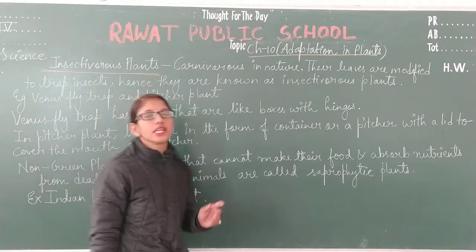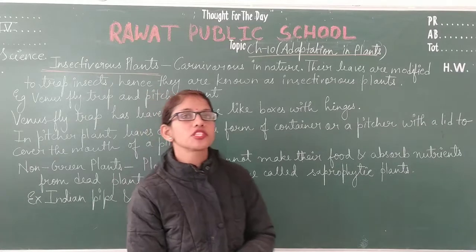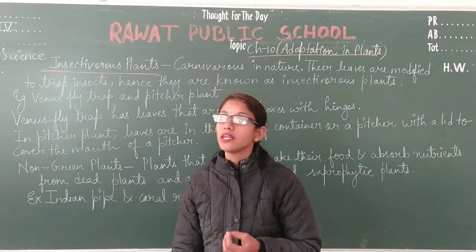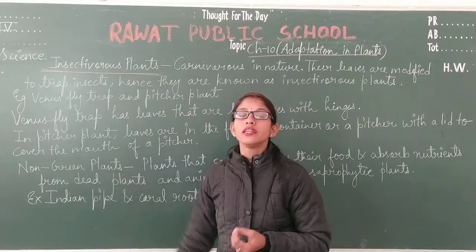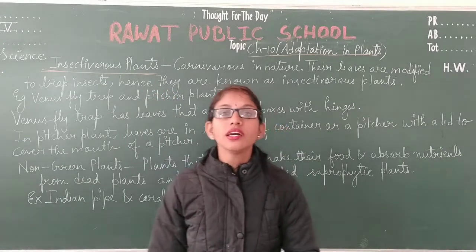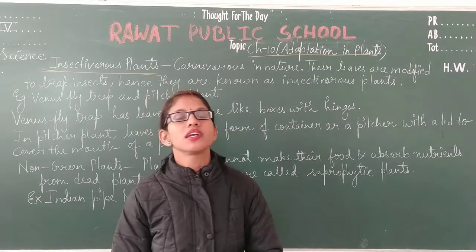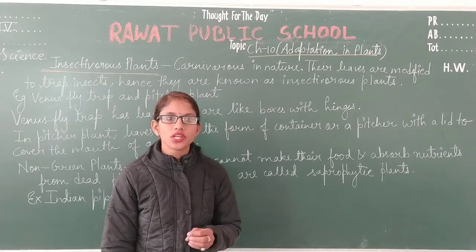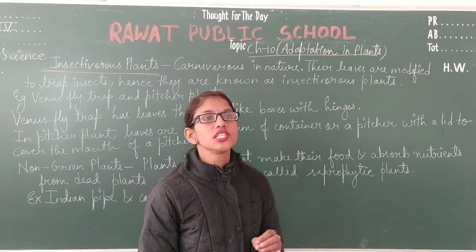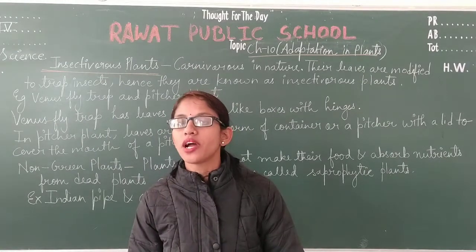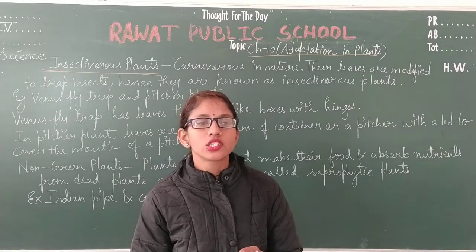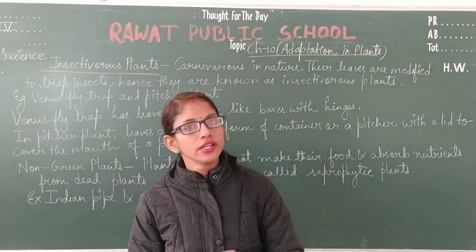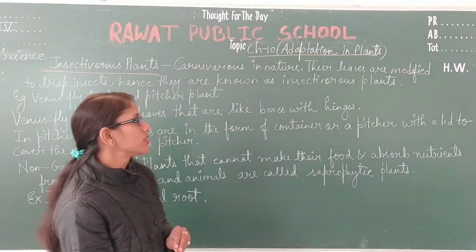As the name tells us, insectivorous plants are plants that are carnivorous in nature and eat insects. These plants generally grow in soil that has a deficiency of nutrients. Because of this deficiency, they feed on insects to fulfill their nutritional needs.